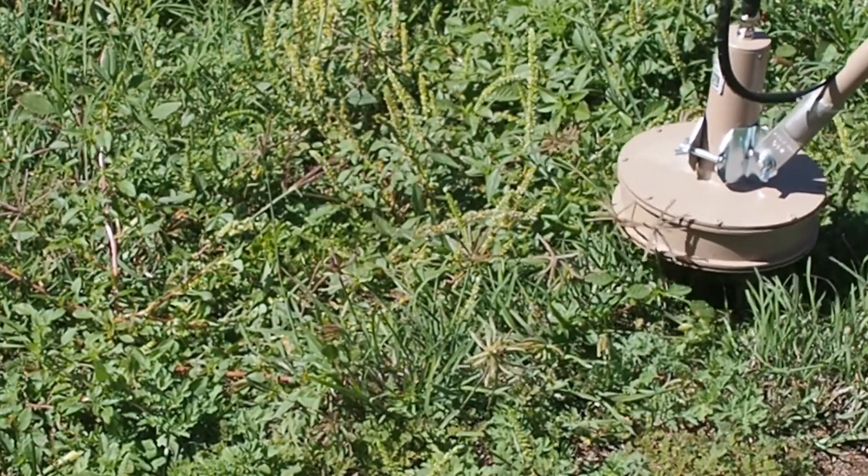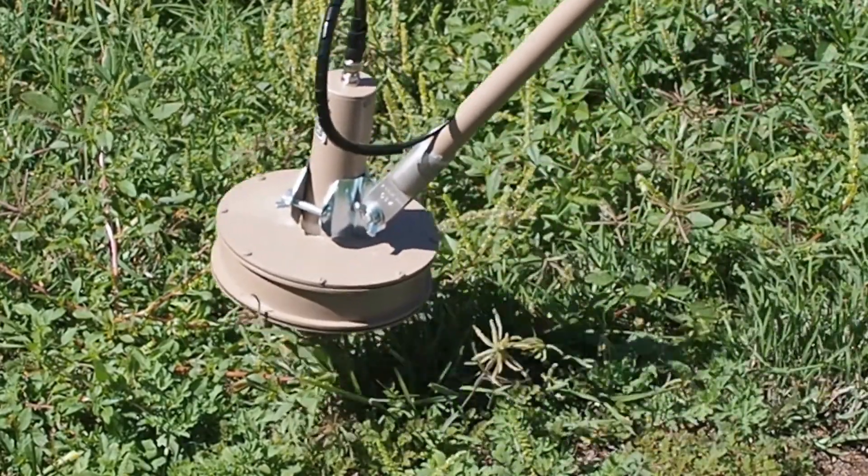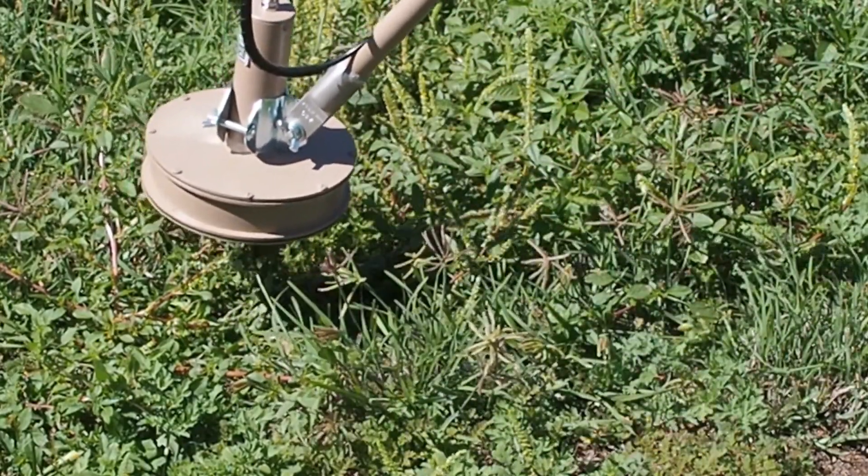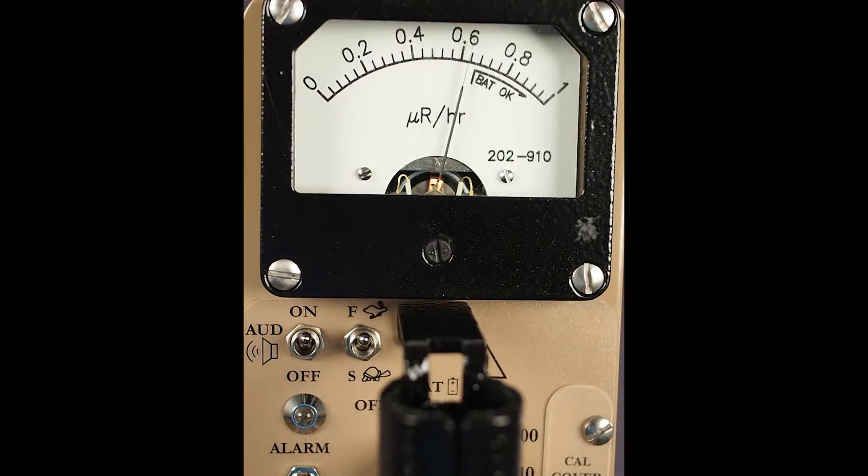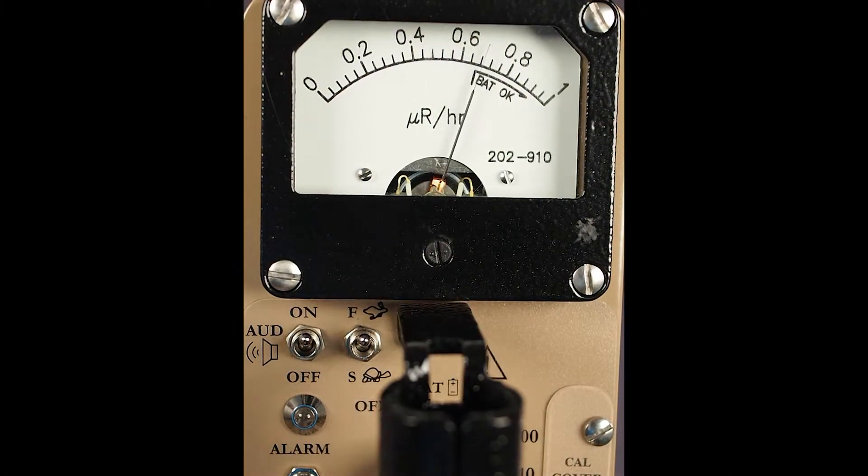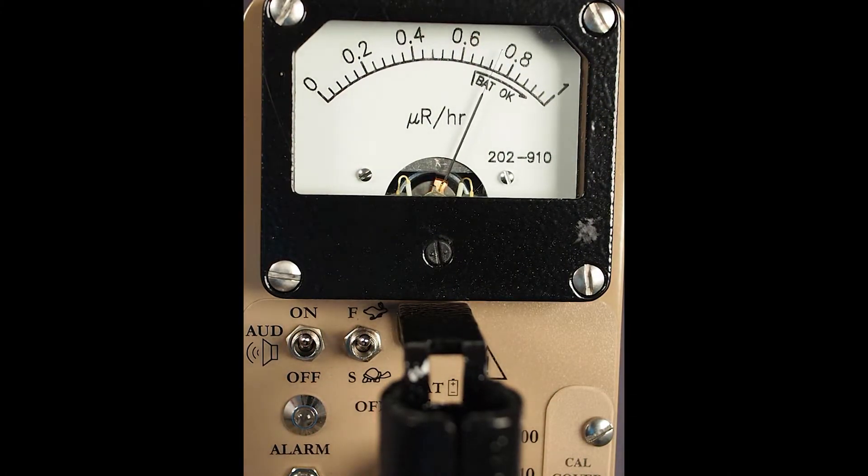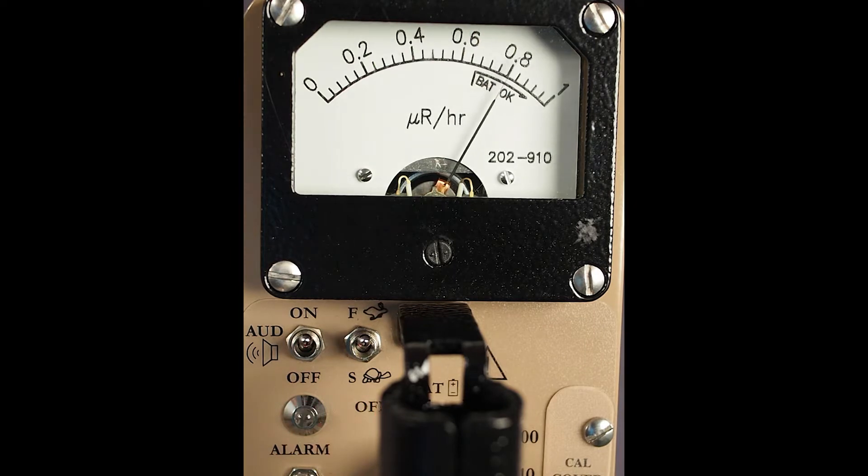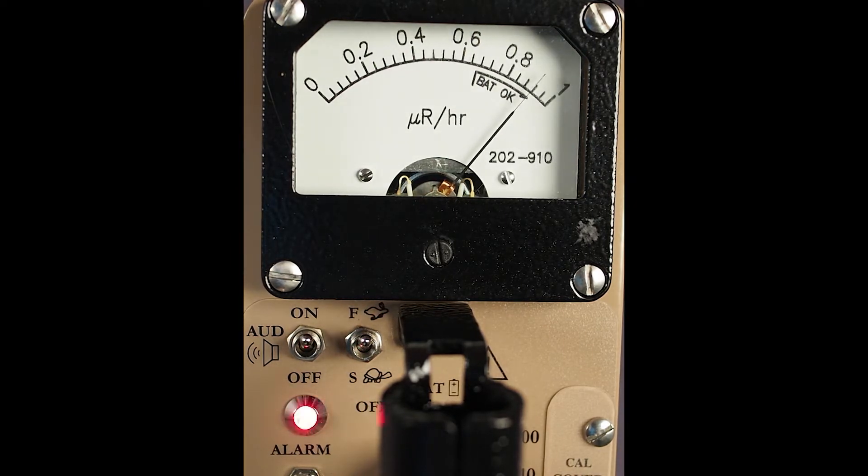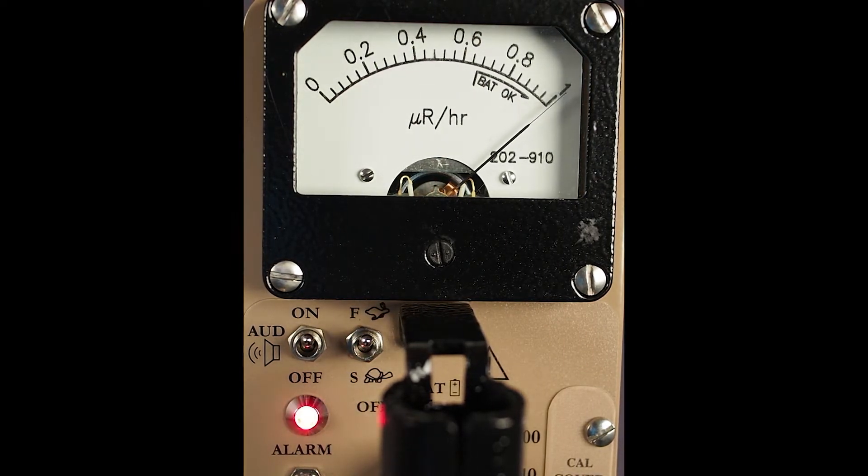Hold the detector so that the bottom is from 1 to 6 inches from the surface to be surveyed. Slowly move the detector over the surface being surveyed. Audible beeps should be heard with increasing frequency as the detector comes closer to a radioactive source and the meter needle will deflect upscale.